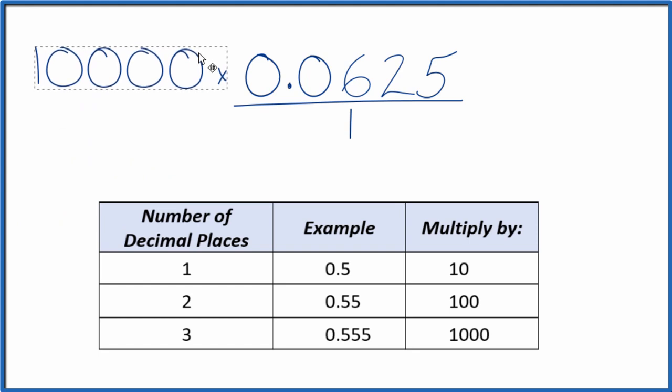So 10,000 times 0.0625, that gives us a whole number. It ends up with 625.